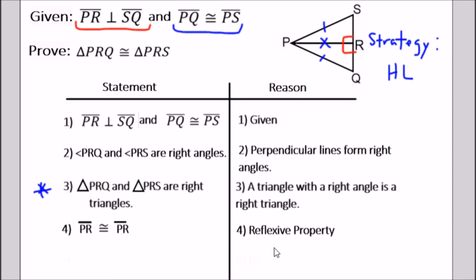At this stage we are ready to complete the proof. Notice we have PQ congruent to PS, which is the hypotenuse part of this postulate, and PR congruent to PR represents the leg part. So we are done.